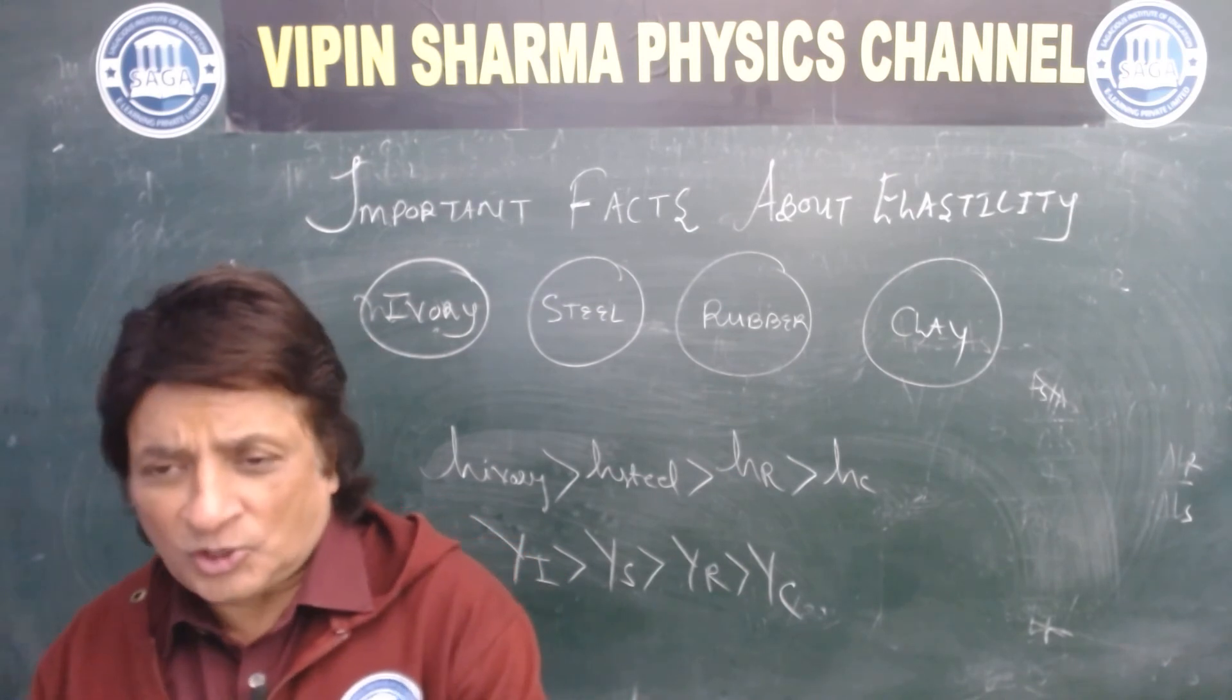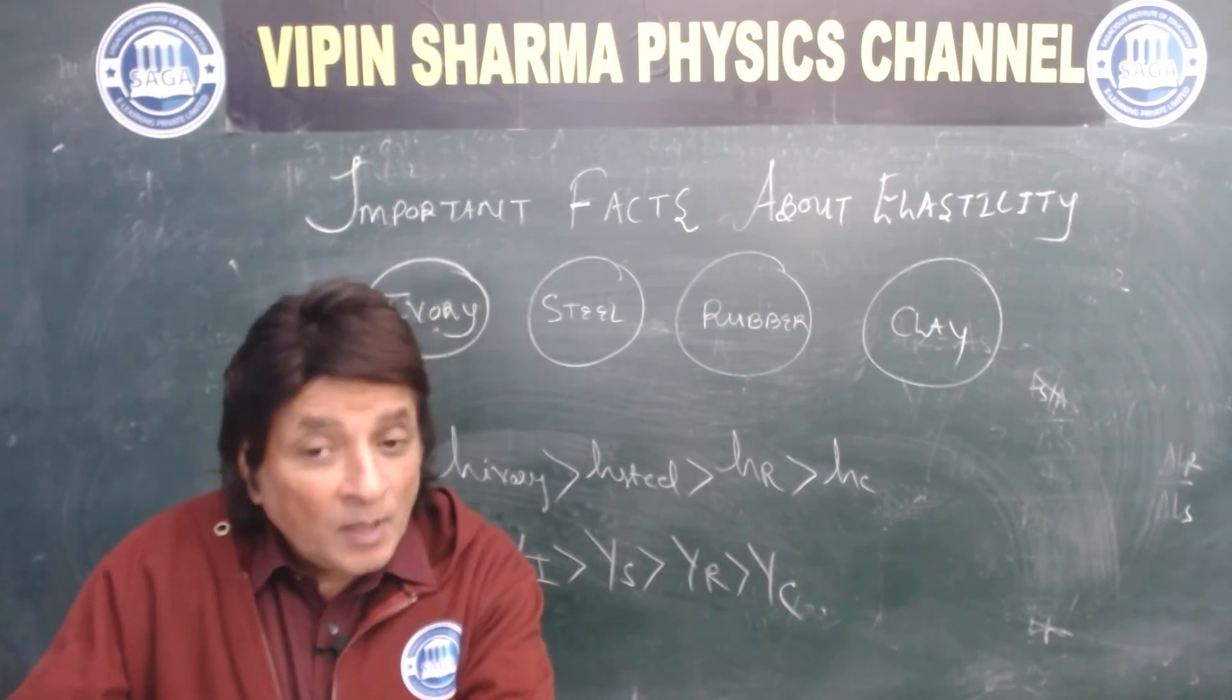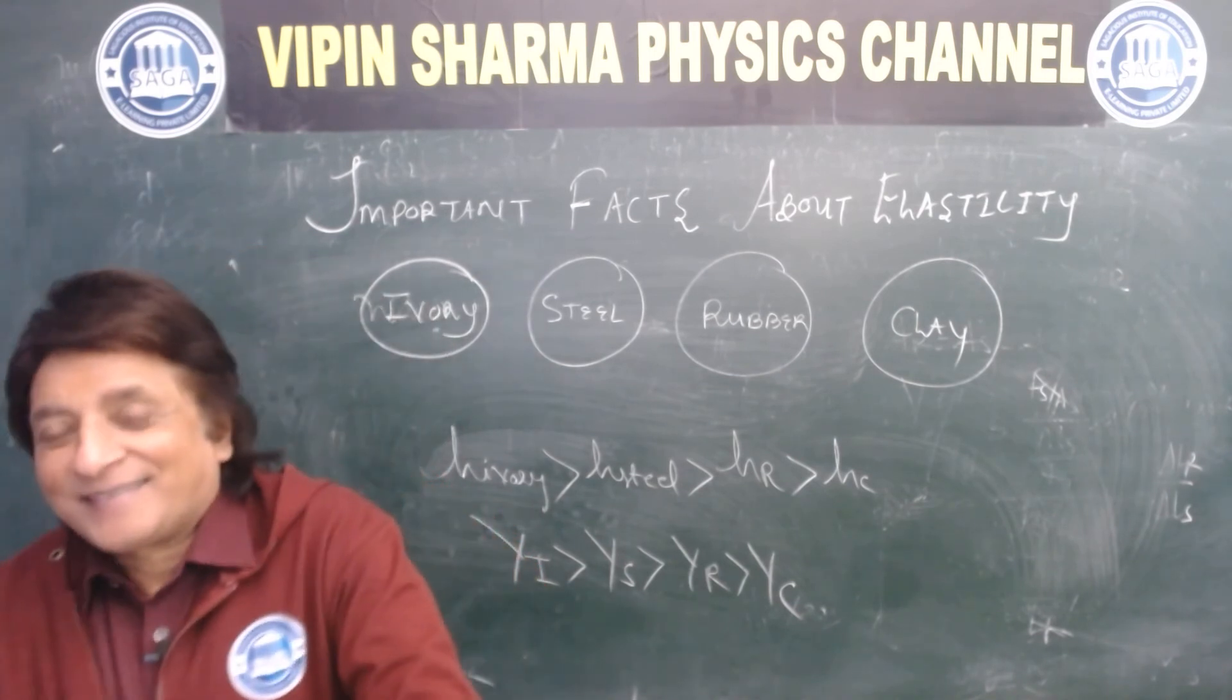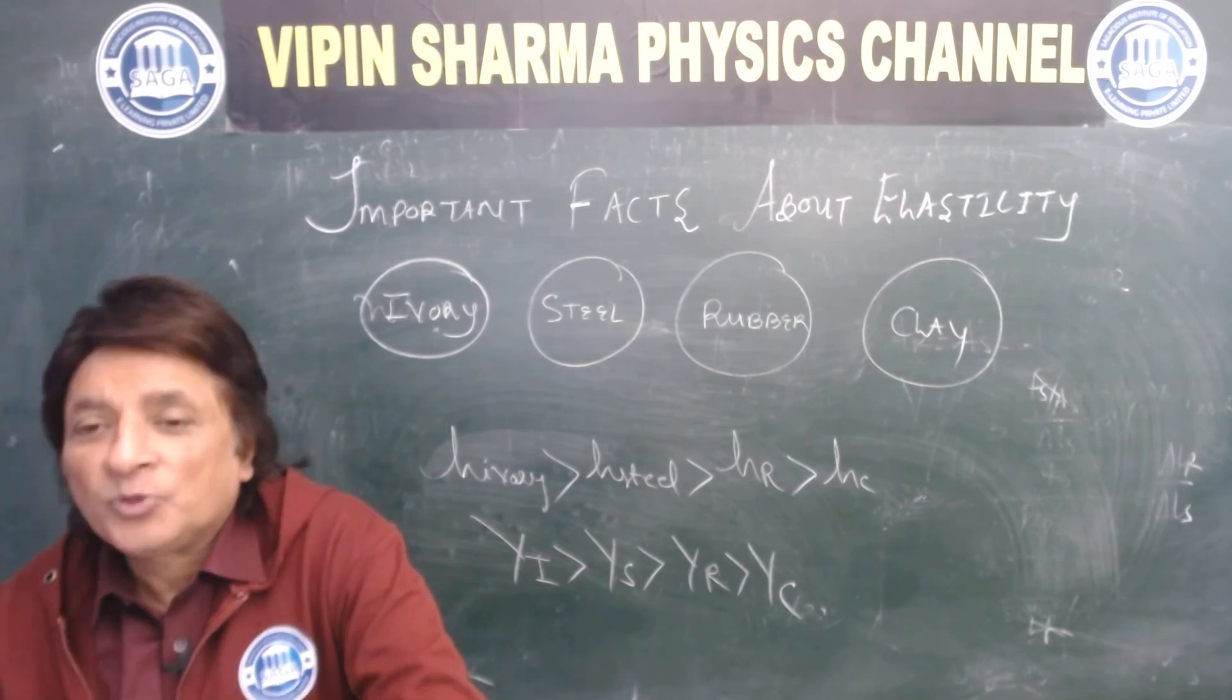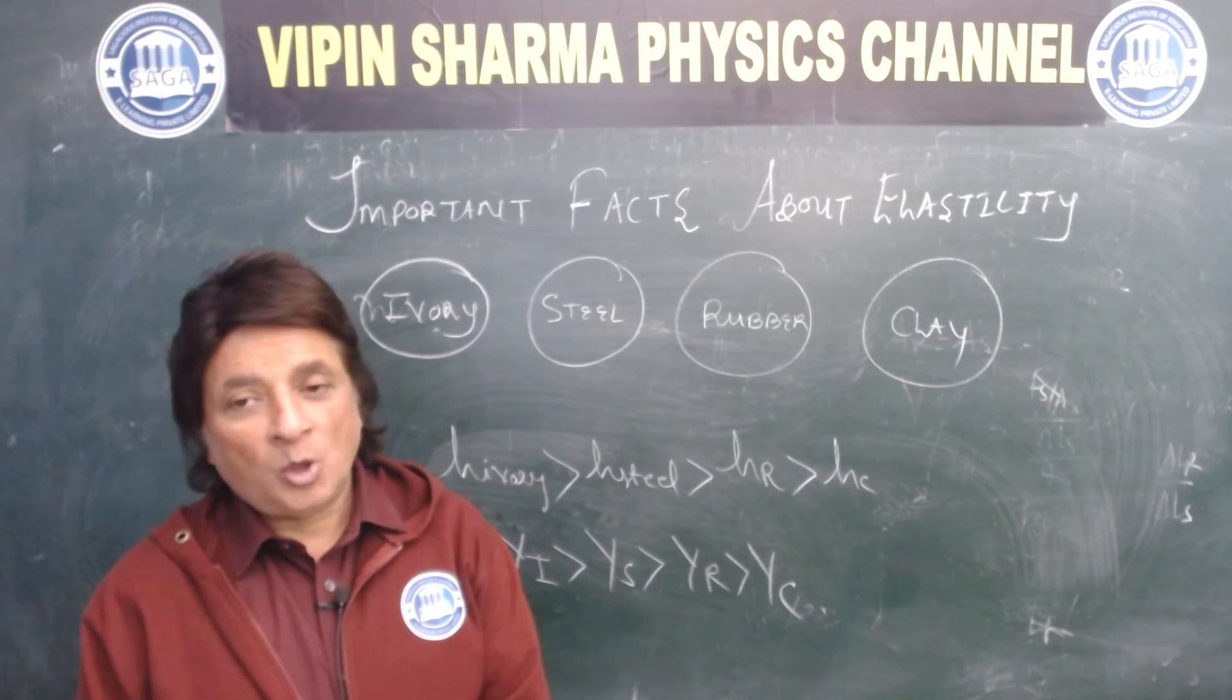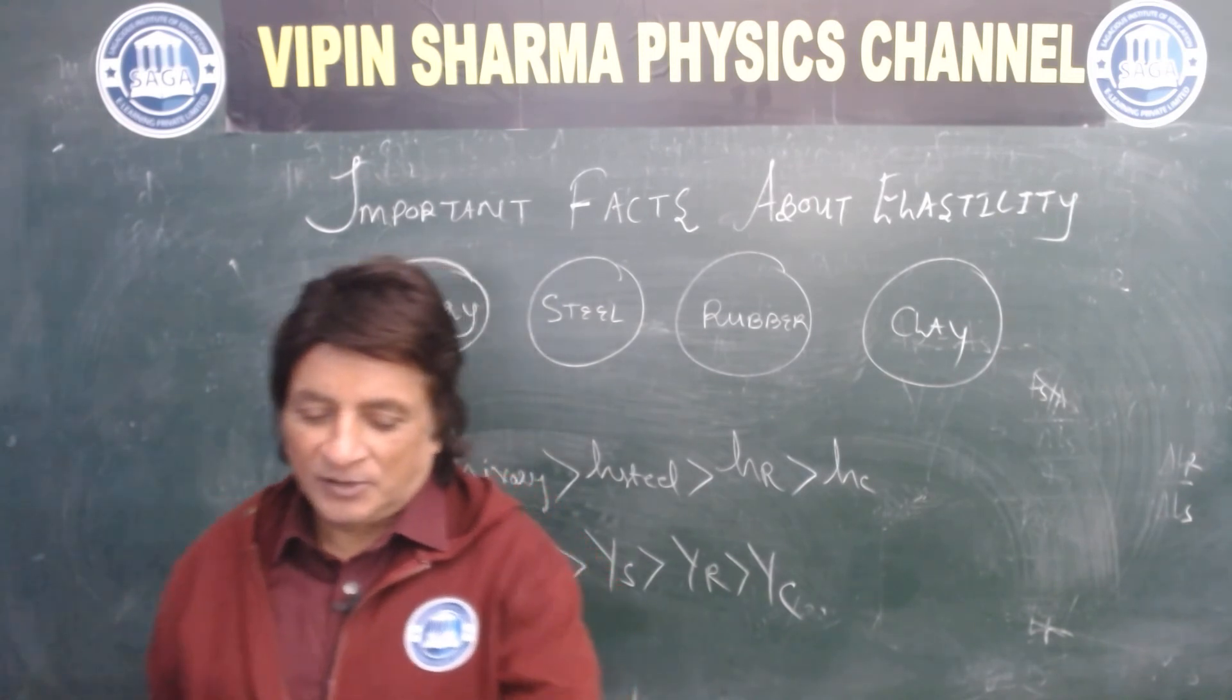Now I have the same material, steel. Can its modulus be different? Yes, it can. If I apply a different stress, the strain will also be different. That's why three elastic moduli are applicable to any given material: Y Young's modulus, K bulk modulus, eta modulus of rigidity. So students, very simple concepts I've tried, I'm trying to tell. Next fact, important fact, fact number five.